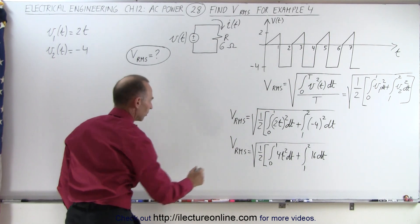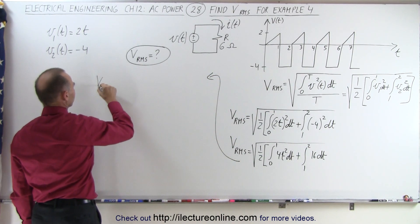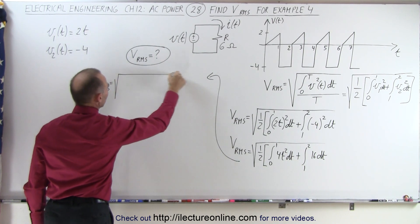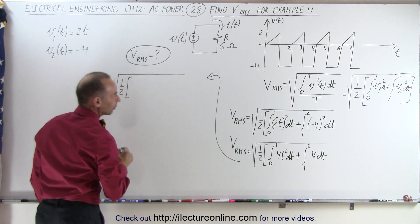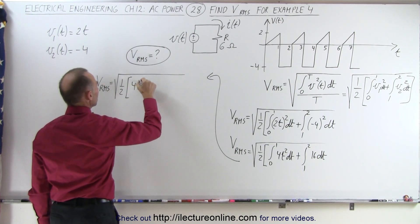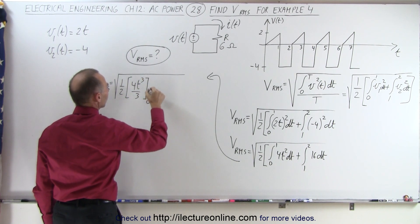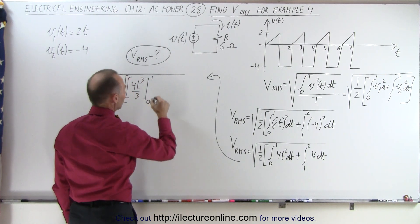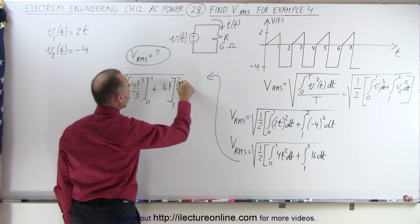All right, so let's come over here and finish it up. So VRMS is equal to the square root of 1 half times 4T squared becomes 4T cubed over 3 evaluated from 0 to 1. Need another bracket here. And then we add to that plus 16T evaluated from 1 to 2.